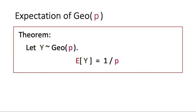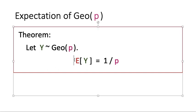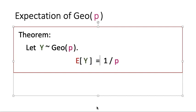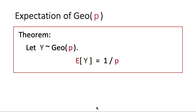Now we have introduced the geometric random variable, so let us find its expectation. We claim that for a geometric random variable with parameter p, its expected value is equal to 1 over p. We are going to show this with three different proofs.